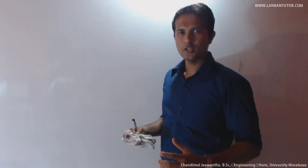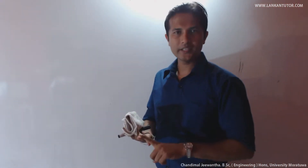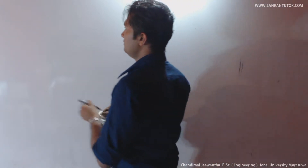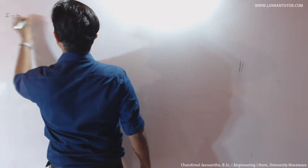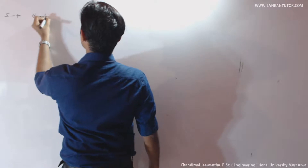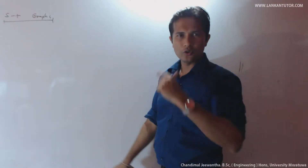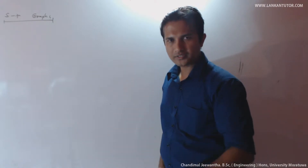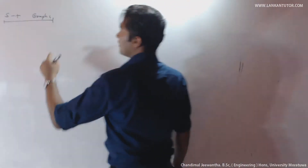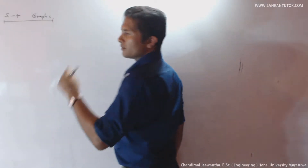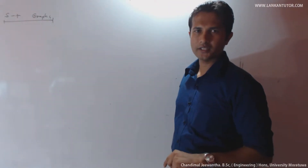Now we have to go through ST Graphs, VT Graphs and AT Graphs. Under ST Graphs, we are going to consider the variation of displacement with time. The gradient of the ST graph gives you velocity.